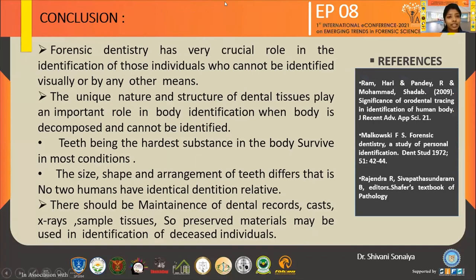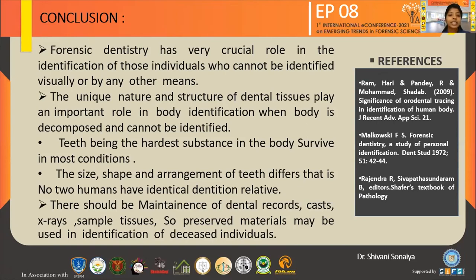In conclusion, forensic dentistry has a crucial role in identification of individuals who cannot be identified visually or by any other means. The unique nature and structure of dental tissues is important — teeth being the hardest substance in the body, they survive in most conditions. The size, shape, and arrangement of teeth differ for everyone; no two humans have identical dentition. Therefore, there should be maintenance of dental records, cast, x-ray, and sample tissues so that preserved materials may be used in the identification of deceased individuals.